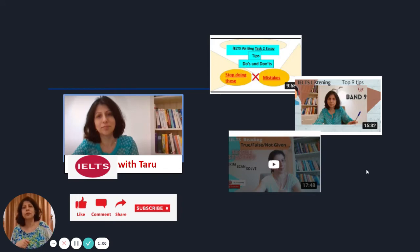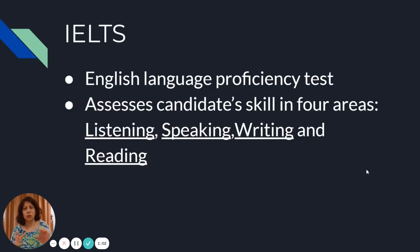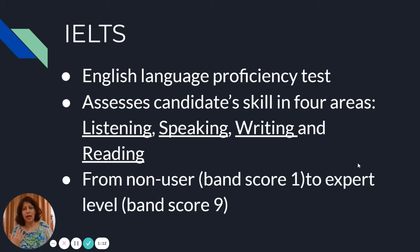First things first, what is IELTS? It's an English language proficiency test that assesses the candidate's skill in four areas: listening, speaking, writing, and reading. There are different band scores that are given from non-user to an expert level, that is band score nine. These are the band scores which will be on your test result form.